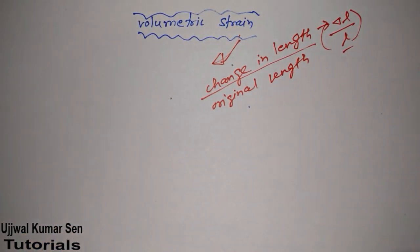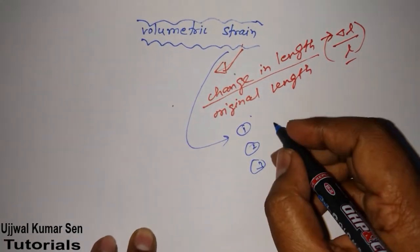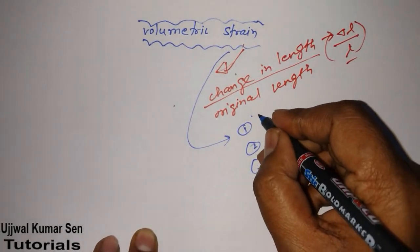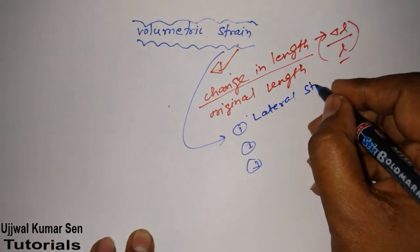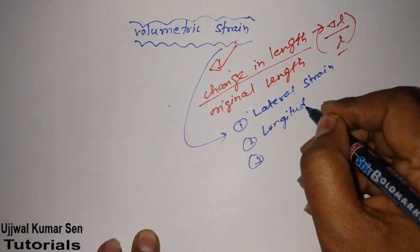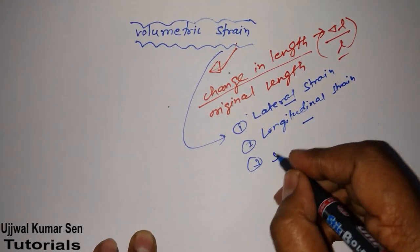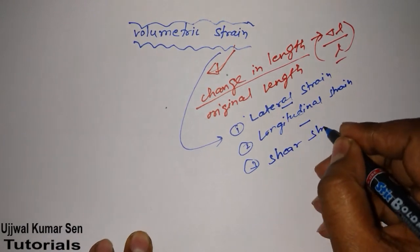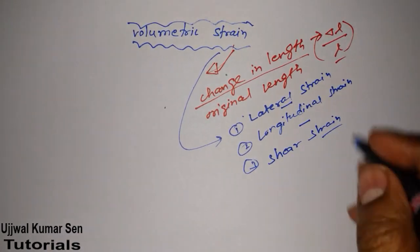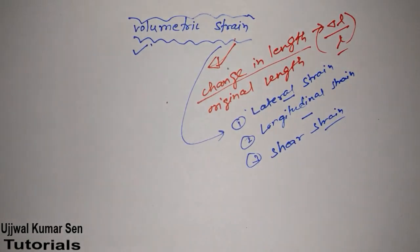You probably already know what strain is, which is why you're here to learn volumetric strain. There are three basic types of strain: lateral strain, longitudinal strain, and shear strain. However, when it comes to volumetric strain, there is a little bit of difference.